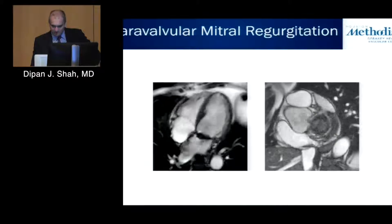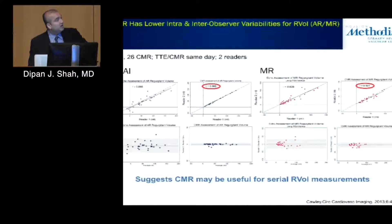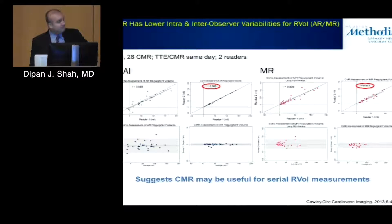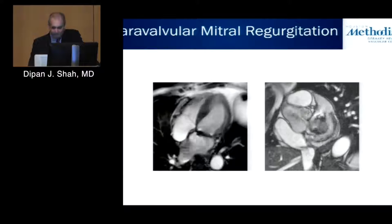One study looked at patients who had both echo and CMR — some with aortic insufficiency and some with mitral regurgitation — examining reproducibility of measurements between two different observers or the same observer measuring twice. It showed a tighter correlation and reproducibility with CMR compared to echocardiography, both for AI and MR assessment. These authors suggested CMR may be a useful technique when following patients for serial assessment of regurgitant volumes.